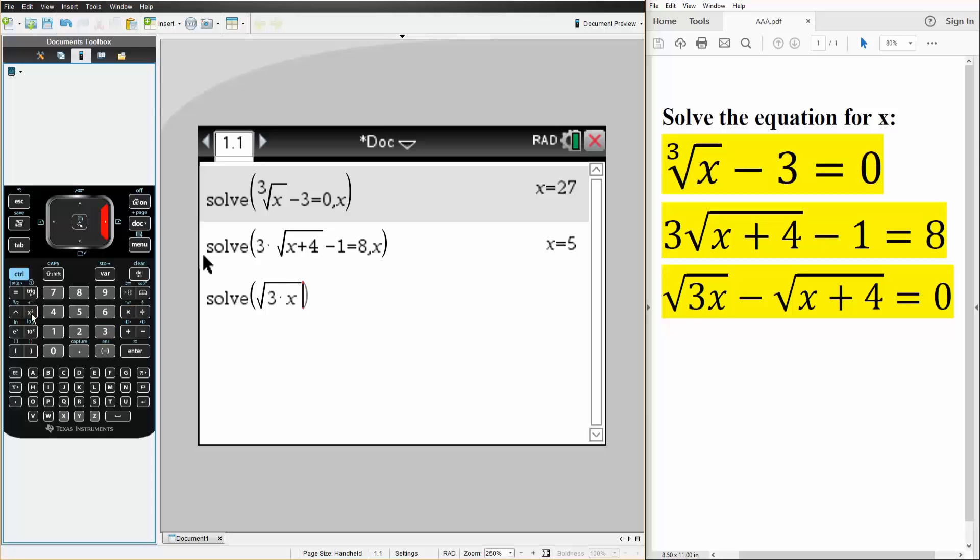minus, Control, this icon right here, x plus 4 is equal to 0, and we're solving for x. So comma x. Hit Enter, and the value of x is 2.